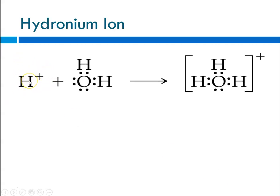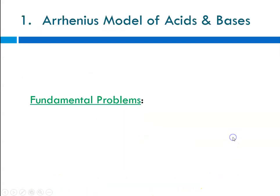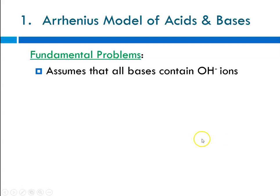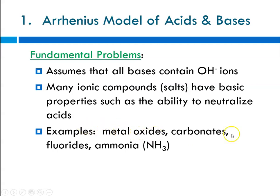When an acid releases H⁺ into water, you get H₃O⁺, called the hydronium ion or hydrated H⁺ ion. Writing H⁺(aq) is interchangeable with writing H₃O⁺. Another fundamental problem with the Arrhenius model for bases is that it assumes all bases contain hydroxide ions — and that is not the case. Many ionic compounds and salts have basic properties and can neutralize acids. Examples include metal oxides, carbonates, fluorides, and ammonia, all of which produce basic solutions in water.